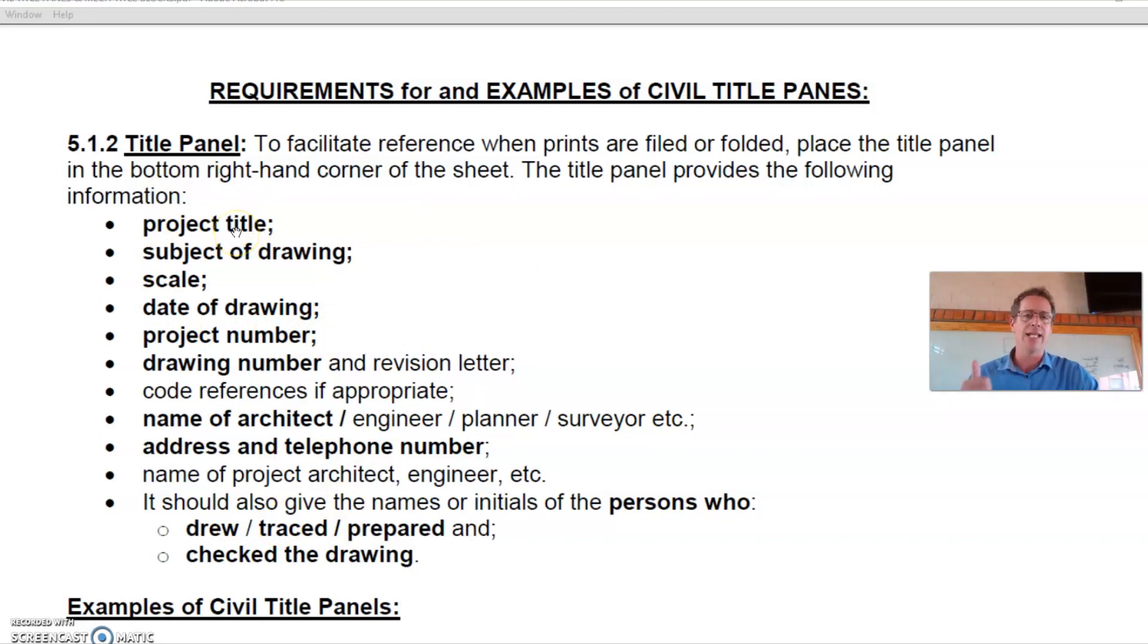What is included in the title panel: First of all, you'll have a project title—for example, new proposed timeshare reception and spa, or new proposed dwelling, or new proposed clubhouse, whatever drawing you are going to be doing. The subject of that drawing is the floor plan or elevation. In your case, it's going to be a floor plan. What scale you were using, the date of that drawing, the project number—that's normally internal and you can come up with your own project number as a fictitious project number. The actual drawing number—is this the first drawing of that floor plan or has there been any revisions? Code references if appropriate, name of architect—in other words, your name and your address and telephone number.